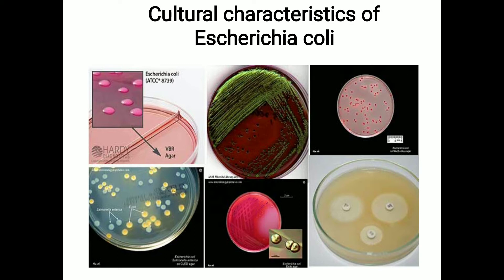A bacterial colony is a visible mass of microbial cells originating from one single cell. E. coli are facultative anaerobes, and the optimum growth temperature required for them is around 37 degrees Celsius, ranging from 10 to 40 degrees Celsius. We will now examine the culture characteristics produced when this organism is grown on different culture media.